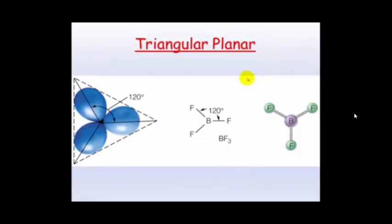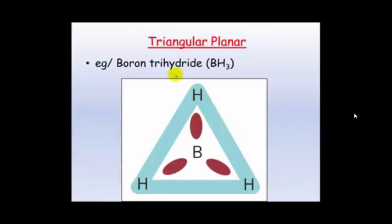Triangular planar. Planar means flat, and triangular means that these are as far apart from each other as they can be, so they're about 120 degrees away from one another. Now, boron trihydride is one of the only molecules that will form this triangular planar shape.